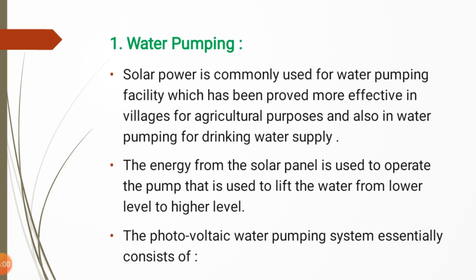The energy from the solar panel is used to operate the pump, which lifts water from a lower level to a higher level. The pump requires electricity for its operation, and this electricity is obtained from the photovoltaic system. In this way the photovoltaic system helps operate the pump so that water can be lifted from low level to high level.